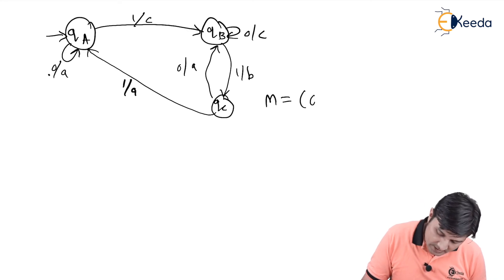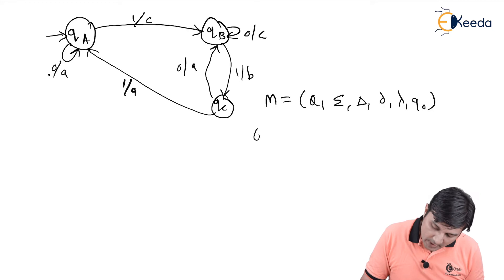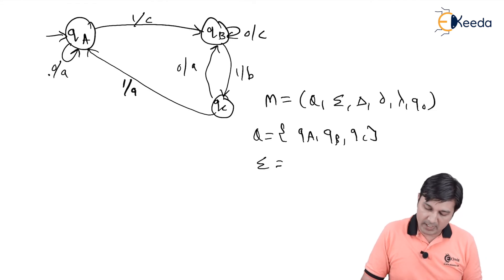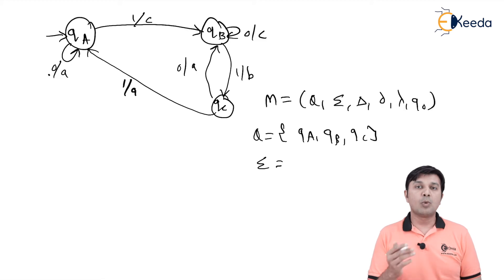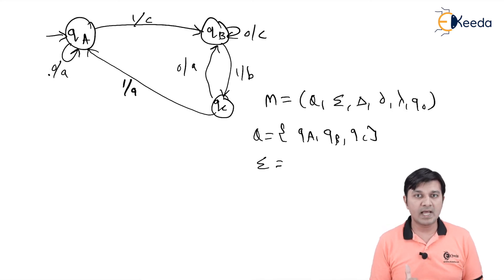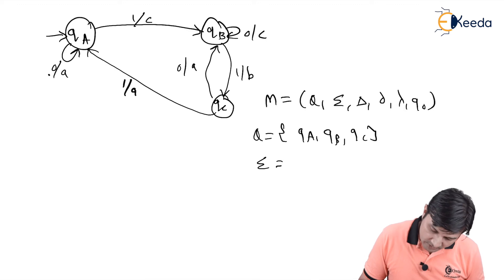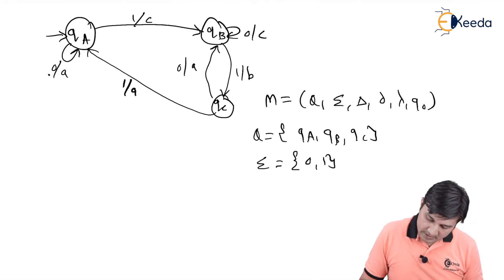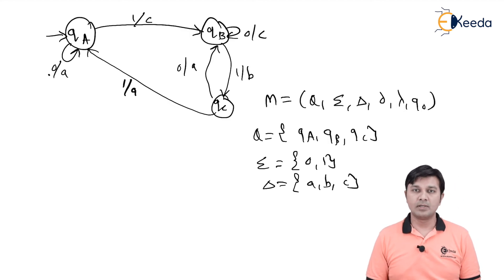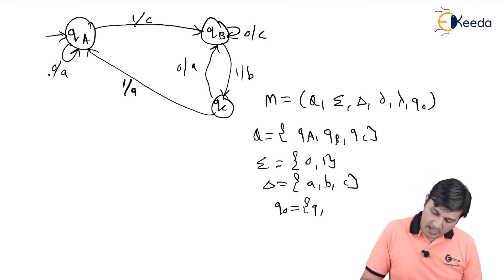Mathematically, M = (Q, Σ, Δ, δ, λ, Q0). So Q = {Qa, Qb, Qc}. The input alphabets are whatever appears to the left of the slash on the edges, which are 0 and 1. The output alphabets are whatever appears to the right of the slash, which are a, b, and c. Q0, the start state, is Qa.